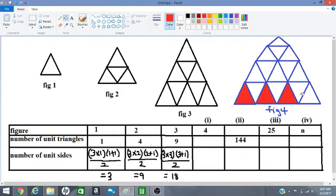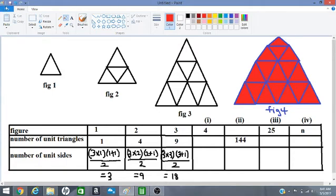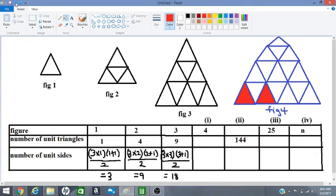1, 2, 3, 4, 5, 6, 7, 8, 9, 10, 11, 12, 13, 14, 15, 16. We have 16 triangles. So let's try that, 16.